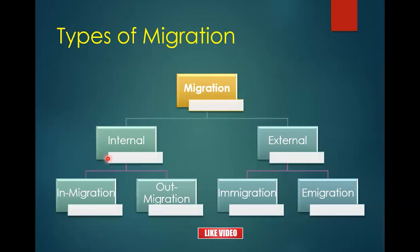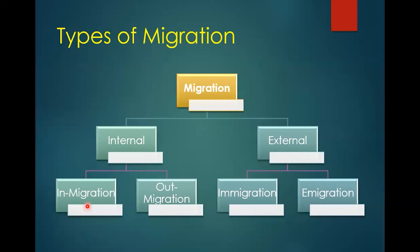Internal migration can be classified into two types: in-migration and out-migration. External migration can also be classified into two types: immigration and emigration. For example, if you are from Kathmandu and people from Pokhara come to Kathmandu, that is in-migration for Kathmandu. If people go out from Kathmandu to another place, that is out-migration.